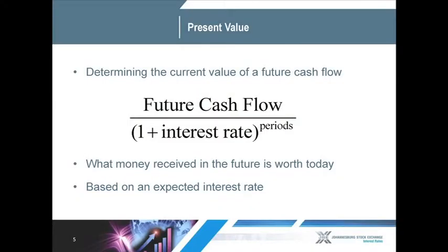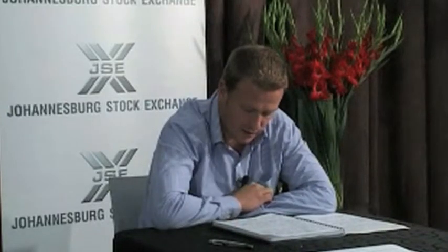At this point I will introduce two new concepts: present and future values. As money erodes over time due to inflation, we should know what our money might be worth in the future, or what an amount of money we are receiving in the future is worth today. For a simple present value calculation, we need three inputs: the cash we have at this point in time, the period we want to invest it for, and the expected interest rate. If we had a policy paying us R1,000 in 10 years' time and expected inflation to be 10% each year, the value of the policy would be roughly R385 today.